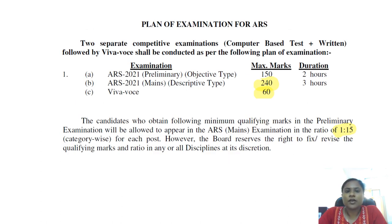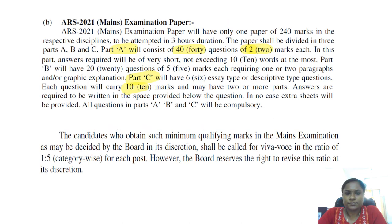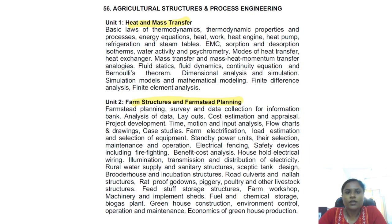As discussed in our previous video, ARS Mains exam is descriptive type with maximum 240 marks and exam duration is three hours. The first 40 questions carry two marks each and will be either fill in the blanks, match the following, or true or false type questions. The next 20 questions carry five marks each and the allotted space to write each answer will be one page. The last six questions carry 10 marks each and you will get one full sheet for writing each answer. In this exam, all questions are compulsory.